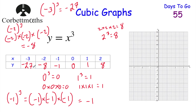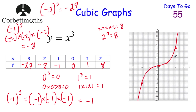So we've got our points — let's plot them. (2, 8) would be up here; (1, 1) would be there; (0, 0) is the origin; (negative 1, negative 1) would be there; (negative 2, negative 8) would be there; and (negative 3, negative 27) would be way down there. That just shows how steep this graph gets — you're cubing, so the next one would be negative 64, and so on. The graph would look something like this, and that would be the graph of y equals x cubed. If it were y equals negative x cubed, it would look the same but the other way around.